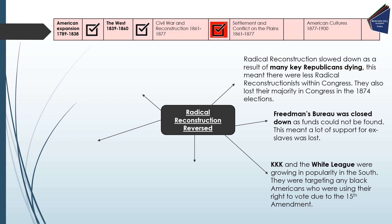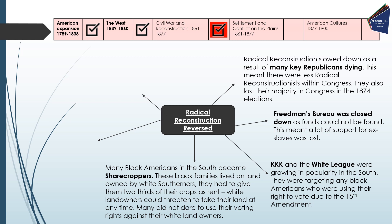The KKK and the White League were growing in popularity in the South, targeting any black Americans who were using their right to vote under the 15th Amendment. The Ku Klux Klan was an extremely violent and aggressive group who were lynching African-Americans and using extreme violence and torture. Many black Americans in the South also became sharecroppers — black families who lived on land owned by white Southerners and had to give two thirds of their crops as rent. White landowners could threaten to take their land back at any time, and sharecropping was not too dissimilar from slavery.